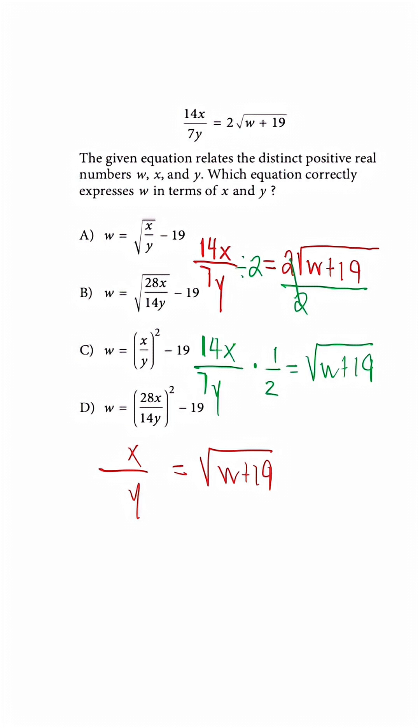Now the next step is to get rid of this radical, so we're going to square it and do the same thing to the other side. So we have x over y squared is now equal to W plus 19.